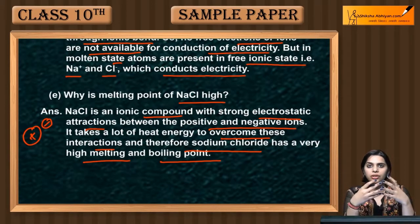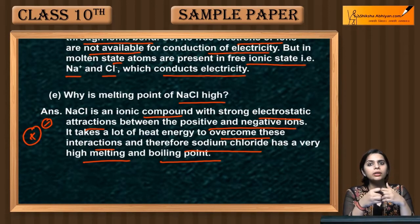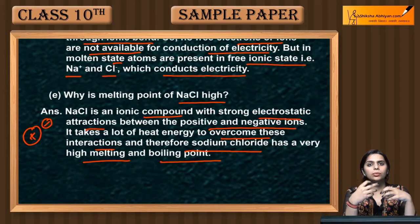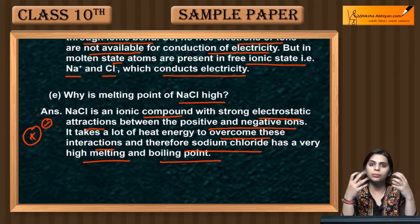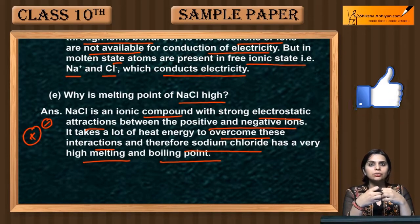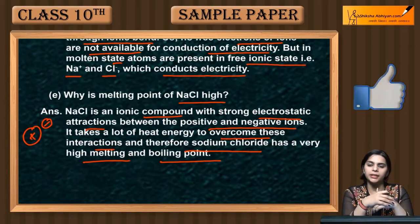There is a lot of energy needed to break the interactions between these two ions. Because NaCl has positive and negative charges with strong interactions, we have to supply more energy to break them. That is why sodium chloride has a high melting and boiling point.